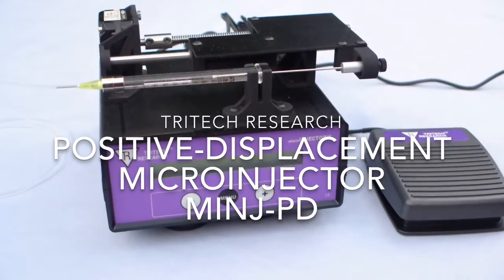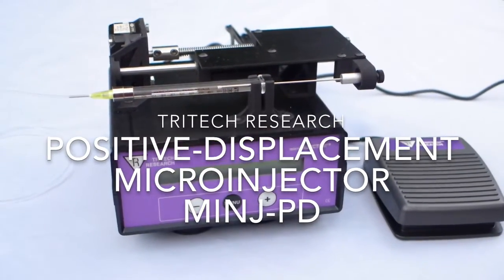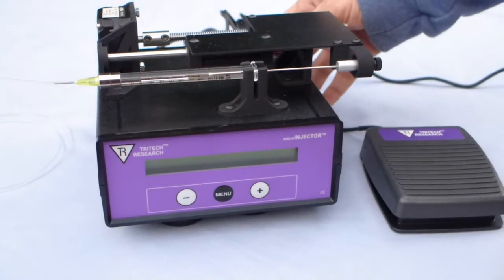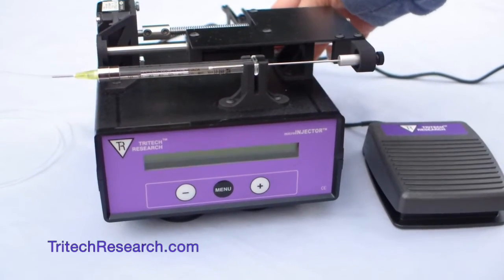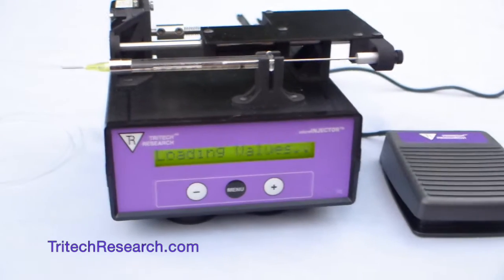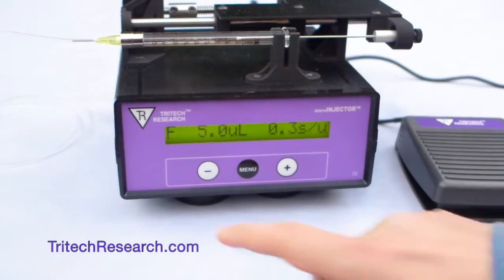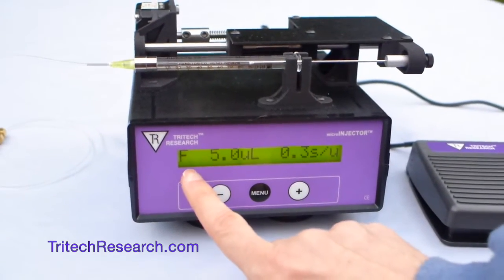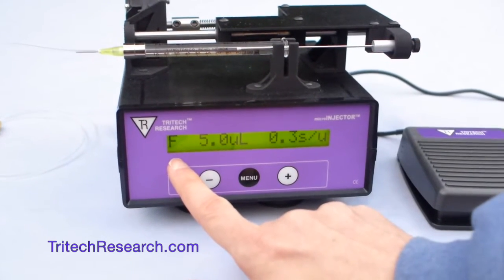Hi, this is Tritech's new version of our Minge PD positive displacement micro-injector. You can turn it on, and then the display will show you the parameters. This first one, the F, means that it's going to inject going forward.